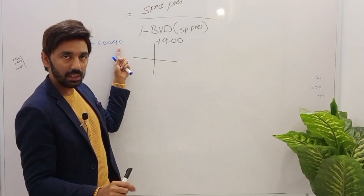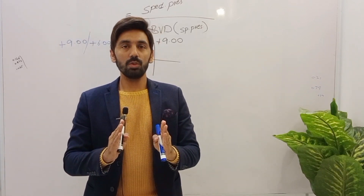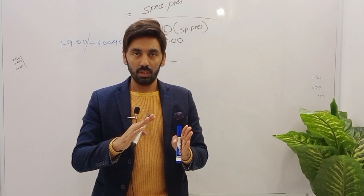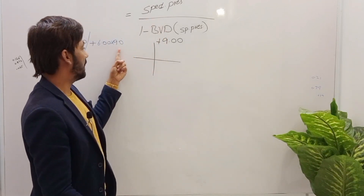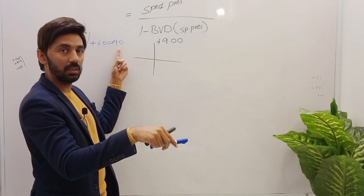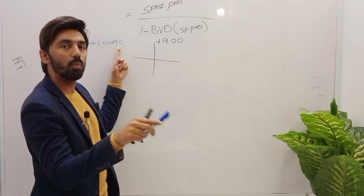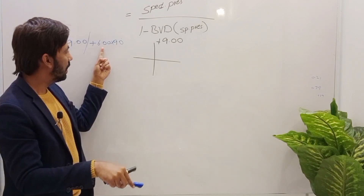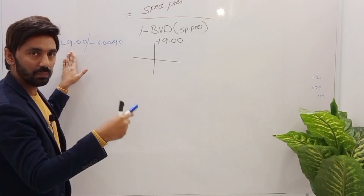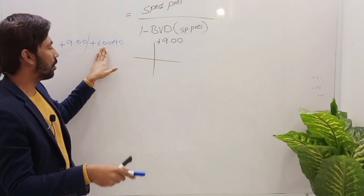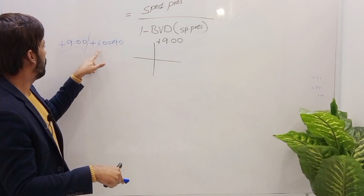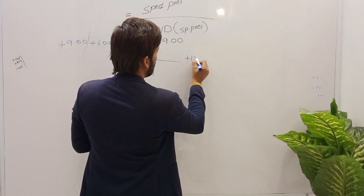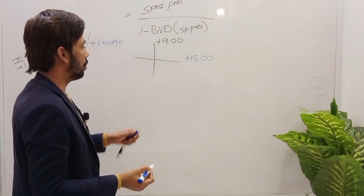A cylindrical power has two principal meridians: the power meridian and the axis meridian, which are 90 degrees apart. If the axis is at 90 degrees, the power is at 180 degrees. So plus 6 cylinder power is at 180 degrees. Adding the spherical plus 9 and cylinder plus 6 gives plus 15 diopters at the 180 meridian.